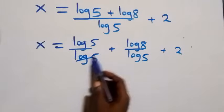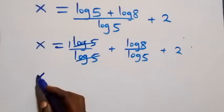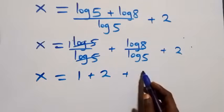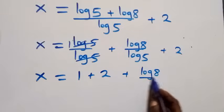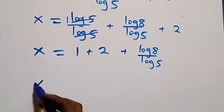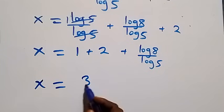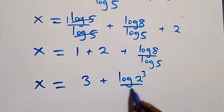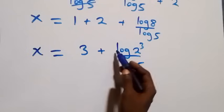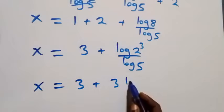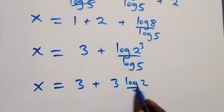Log 5 over log 5 cancels to give 1, so we have x equals 1 plus log 8 over log 5 plus 2. Combining the integers: 1 plus 2 is 3. We can write 8 as 2 raised to power 3, so x equals 3 plus log of 2 raised to power 3, over log 5. Applying the power rule, the 3 comes down: x equals 3 plus 3 log 2 over log 5.